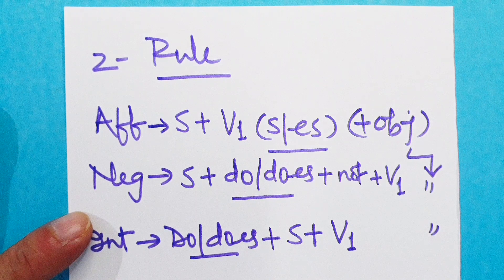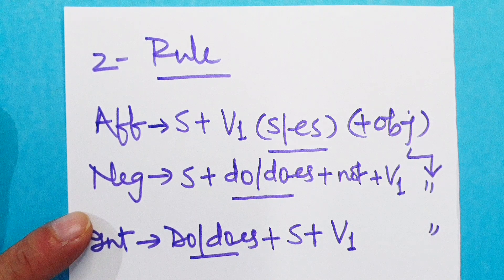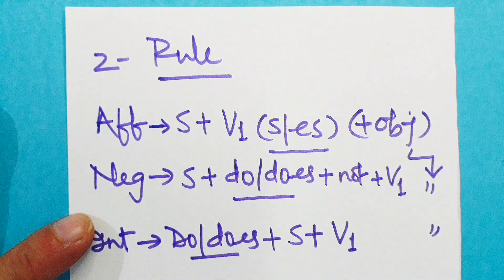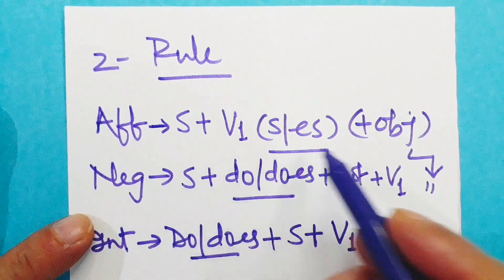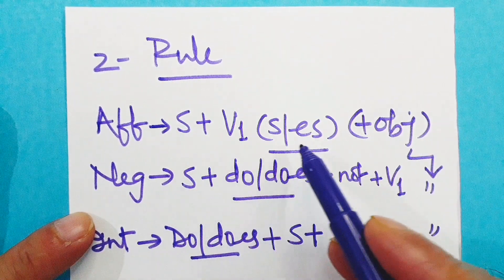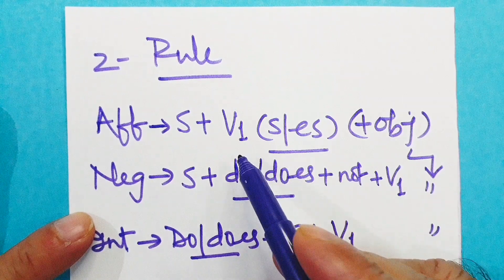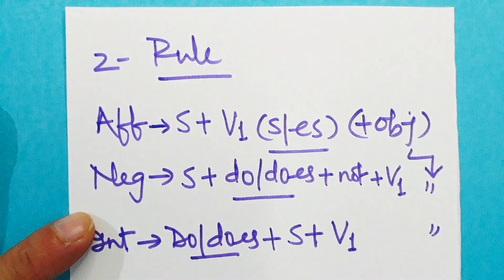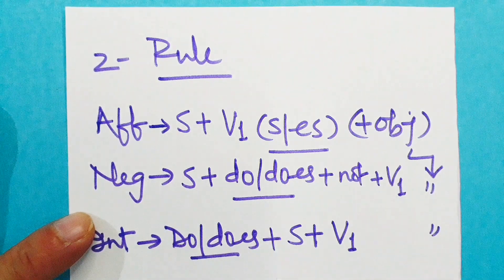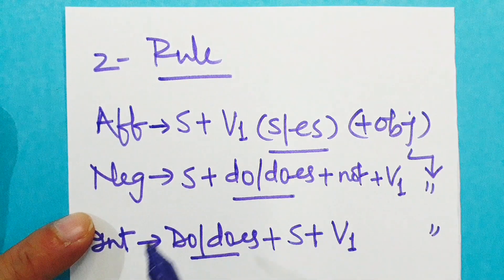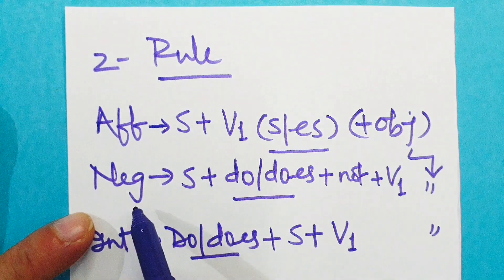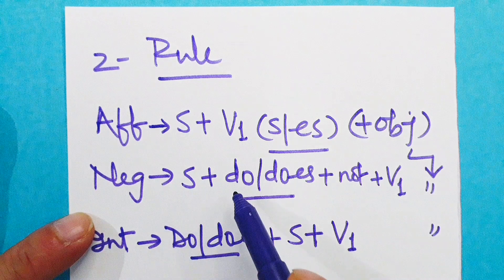It can be first person, second person singular or plural, or third person plural. Now type one, subject third person singular: he. He writes a letter. He is subject, V1 write, then ES I have added. Why? Because he is subject, third person singular, then we have to add S or ES to V1. Here for write, we have to add S. It becomes he writes. He writes a letter.